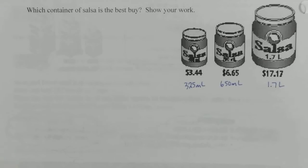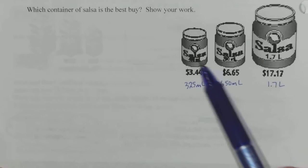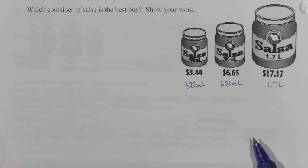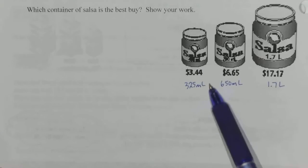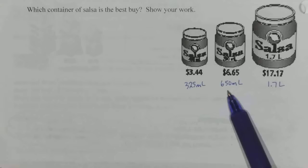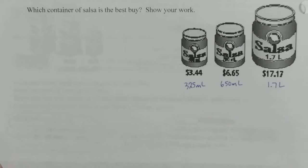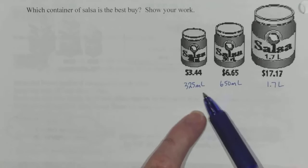For this problem, we're comparing salsa containers and want to know which is the best buy. We need to show our work. The quantities are not legible on these, so I'm going to write them: 325 milliliters, 650 milliliters, and 1.7 liters.